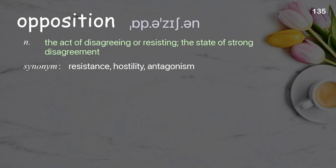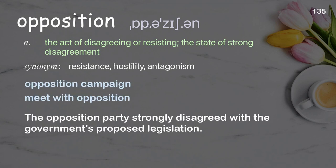Opposition: the act of disagreeing or resisting; the state of strong disagreement. Examples: opposition campaign, meet with opposition. The opposition party strongly disagreed with the government's proposed legislation.